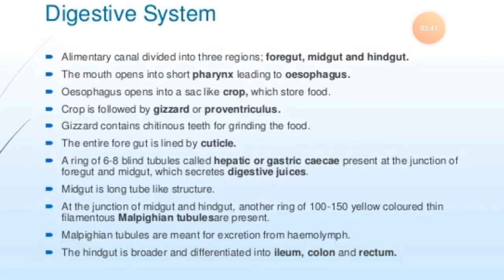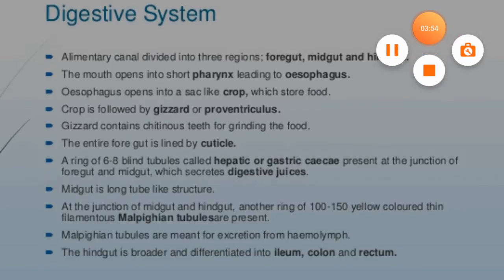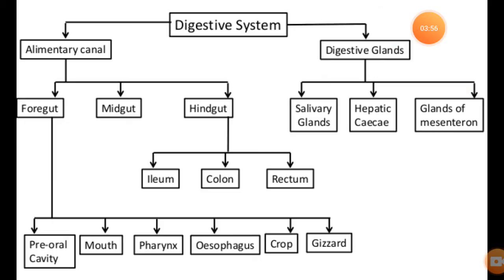The alimentary canal of the cockroach is divided into different categories. The alimentary canal is six to seven centimeters in length and contains different parts: foregut, midgut, and hindgut.